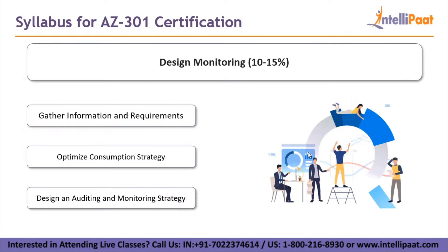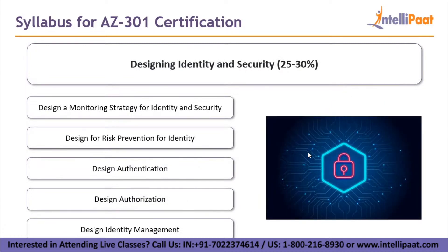The first subsection is Design Monitoring, which has a weightage of 10 to 15 percent. It involves gathering information and requirements, optimizing the consumption strategy, and designing auditing and monitoring systems. The next subsection is Designing Identity and Security — a major concern. This covers skills like designing a monitoring strategy for identity and security, designing for risk prevention for identity, and designing authentication and authorization.